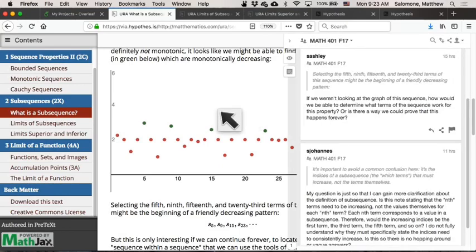Sarah makes the point in this comment that in this example I was choosing a sequence of green terms which looked like they were decreasing monotonically. And I did that by just looking at the graph and saying, oh well, if I choose the fifth and then the ninth, and then the fifteenth, and then the twenty-third, if I choose those terms then I'm going to get a sequence which is decreasing. And Sarah asks, well, how would we know how to do this without the graph?